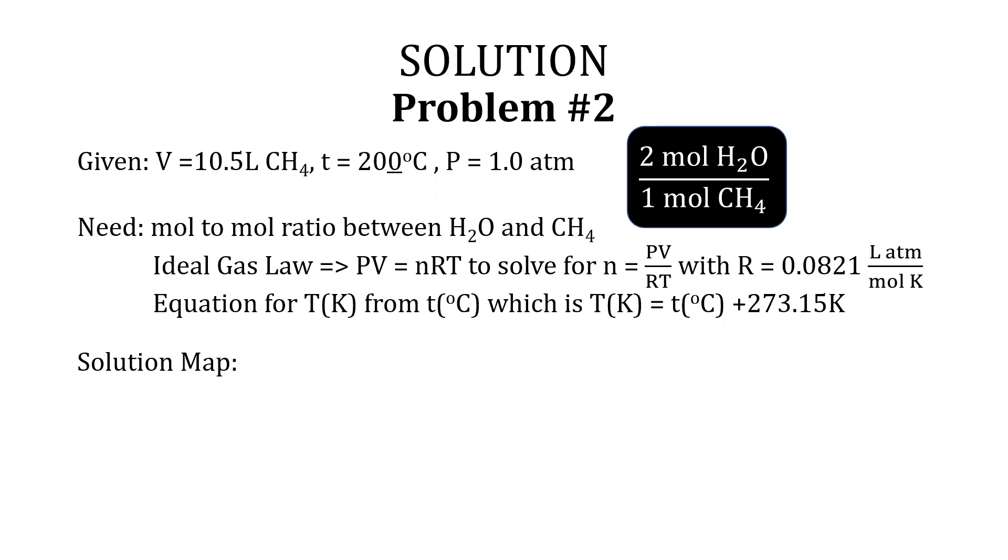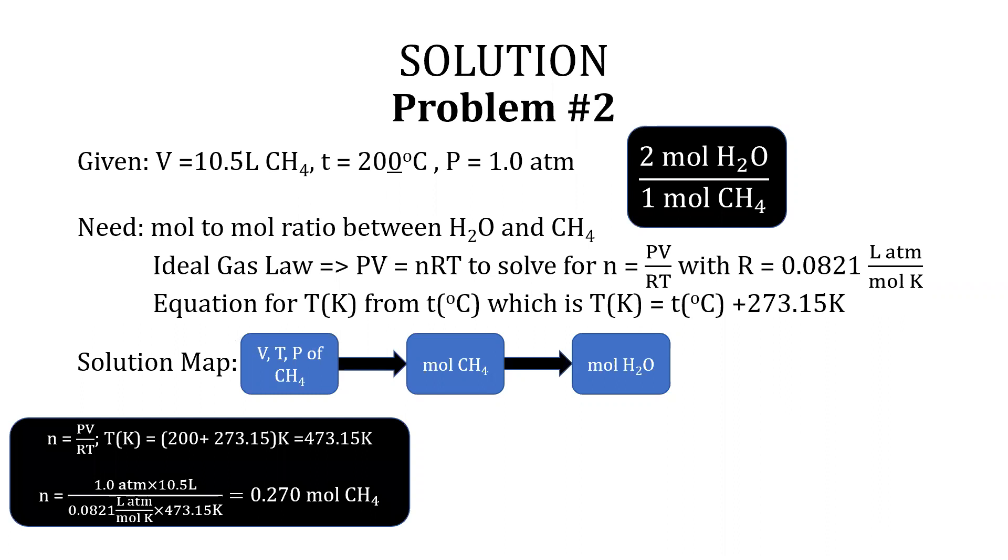The solution map is by first using the values of V, T, and P for CH4 and converting by the ideal gas law to moles of CH4, then multiplying by the mole ratio to convert to moles of H2O. The solution begins by finding the temperature in Kelvin units, which is 473.15 K. Since n equals PV over RT, plugging all the values equals 0.270 mole of CH4.